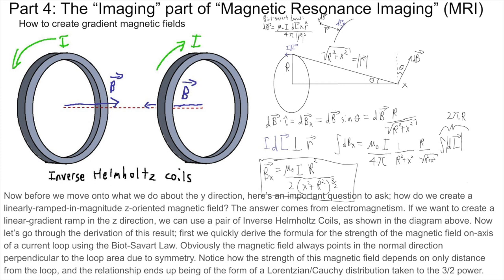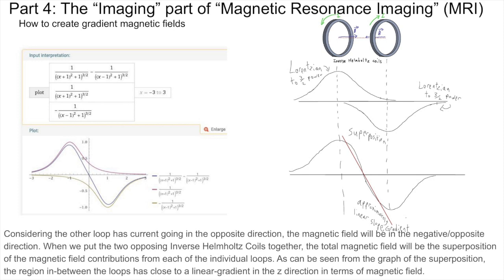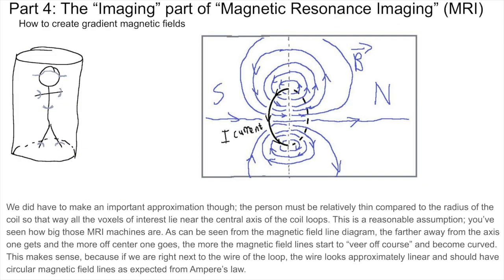Obviously, the magnetic field always points in the normal direction perpendicular to the loop area due to symmetry. Notice how the strength of this magnetic field depends only on distance from the loop, and the relationship ends up being of the form of a Lorentzian/Cauchy distribution taken to the 3/2 power. Considering the other loop has current going in the opposite direction, the magnetic field will be in the negative/opposite direction. When we put the two opposing inverse Helmholtz coils together, the total magnetic field will be the superposition of the magnetic field contributions from each of the individual loops. As can be seen from the graph of the superposition, the region in between the loops has close to a linear gradient in the Z-direction in terms of magnetic field. We did have to make an important approximation though: the person must be relatively thin compared to the radius of the coil so that all the voxels of interest lie near the central axis of the coil loops.